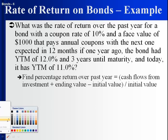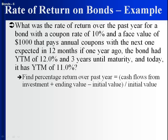Here's a more complex example: find the rate of return over the past year for a bond with a coupon rate of 10%, a face value of $1,000, paying annual coupons. The next coupon is expected in 12 months, meaning one just got paid. One year ago, the bond had a yield of 12% and three years until maturity. Today, it has a yield to maturity of 11%. We need the cash flows, the ending value, and the initial value.